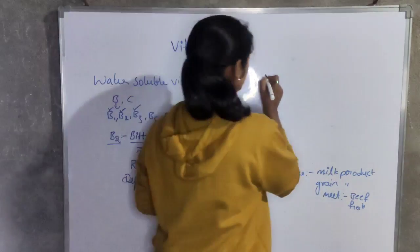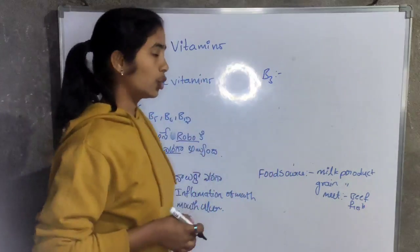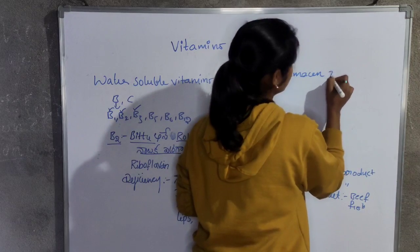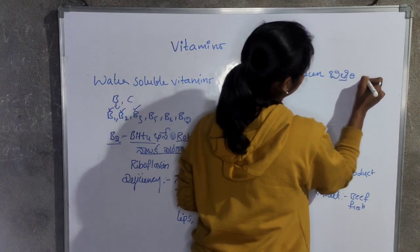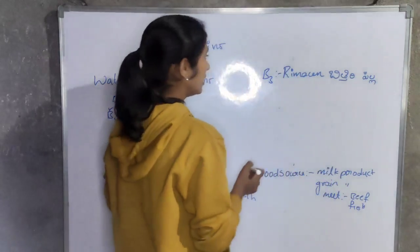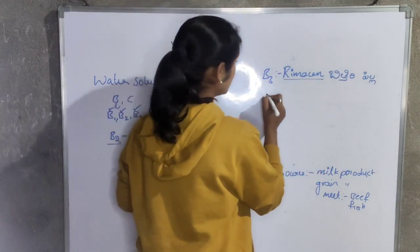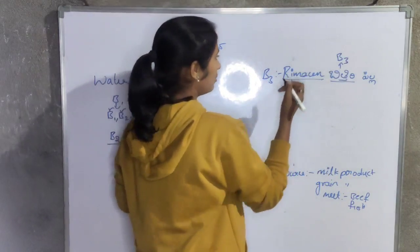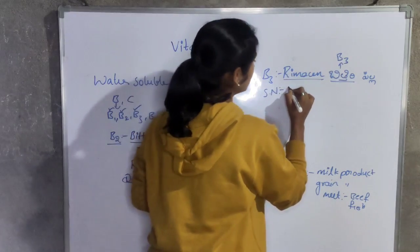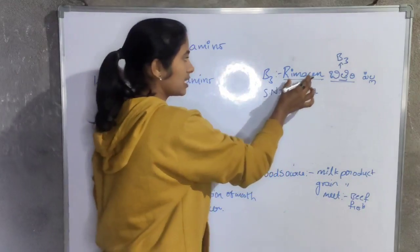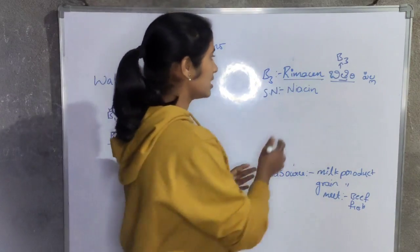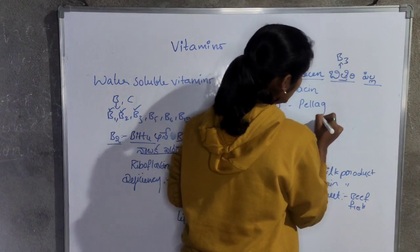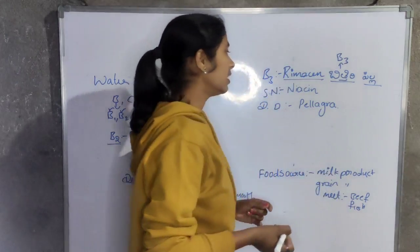Next, B3. The scientific names for B3 are niacinamide and niacin. The deficiency disease caused by B3 deficiency is pellagra. Pellagra involves skin-related problems.